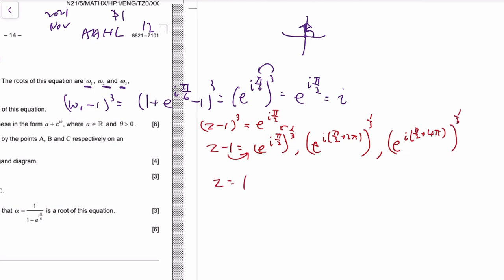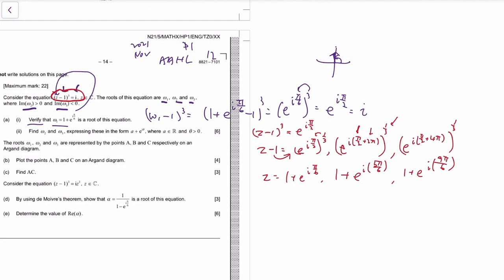Similarly, you add another 2 pi before you raise to the power of one third. So z would be 1 plus e to the i pi over 6, that's omega 1; 1 plus e to the i—2 pi plus pi over 2, that's like 5 pi over 2, over, and then you times 1 third, so 5 pi over 6; and also 1 plus e to the i, 9 pi over 6.